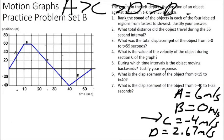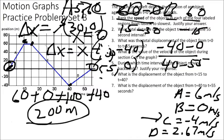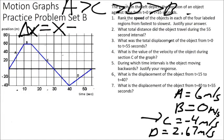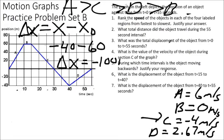Question six: what is the displacement of the object from t equals 15 to t equals 40? Displacement equals final position minus initial position. At t equals 40, our final position is negative 40. At 15 seconds, initial position is positive 60. So negative 40 minus 60 gives a delta X of negative 100 meters during that time interval — the object moved to the left 100 meters between t equals 15 and t equals 40.